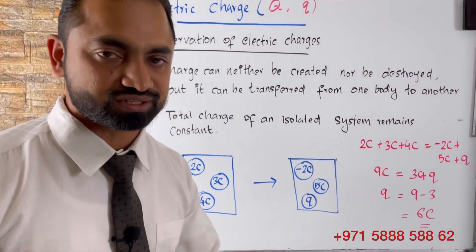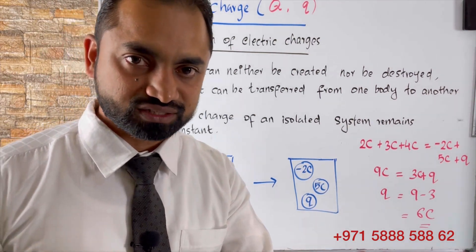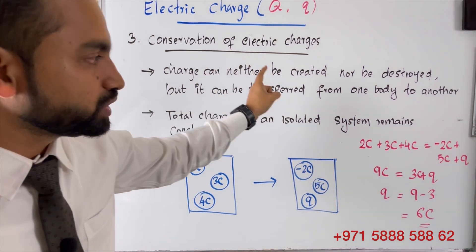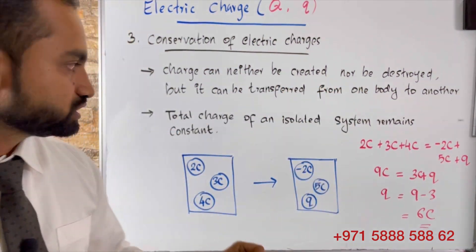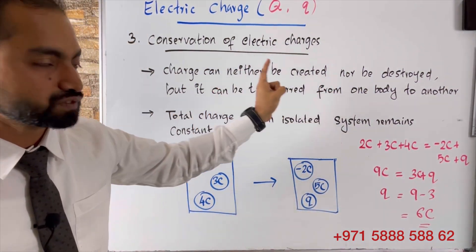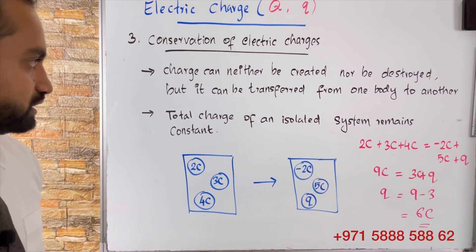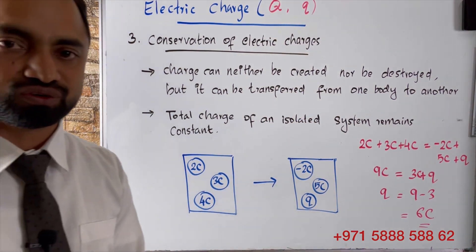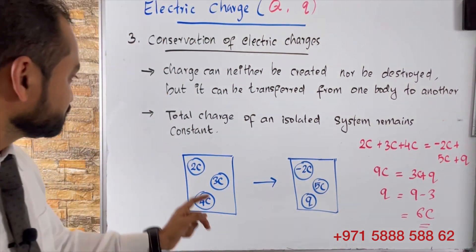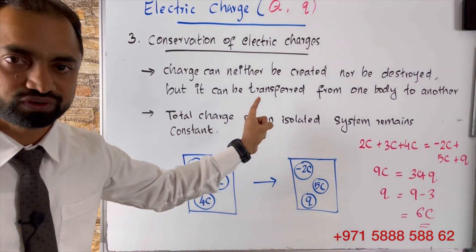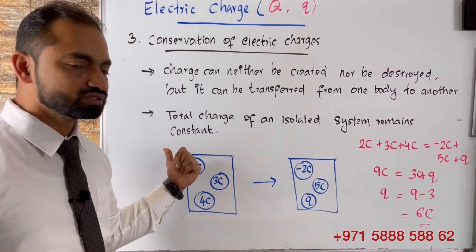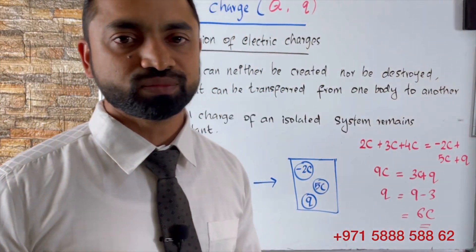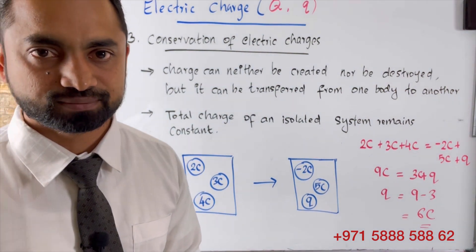So, what is conservation of electric charges? Conservation of electric charge states that charge can neither be created nor be destroyed, but it can be transferred from one body to another. Equivalently, the total charge of an isolated system remains constant.